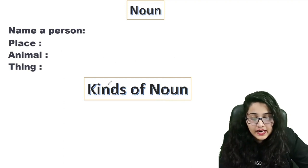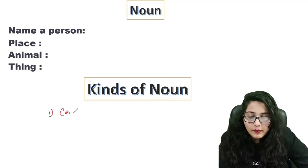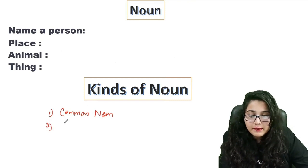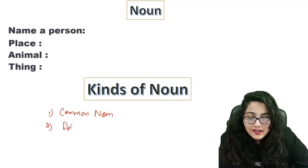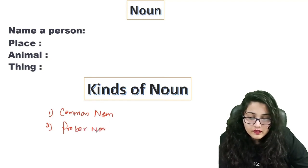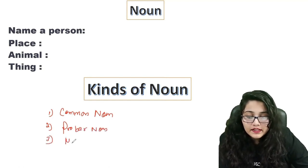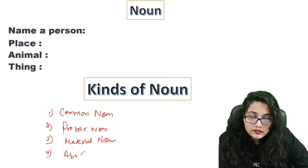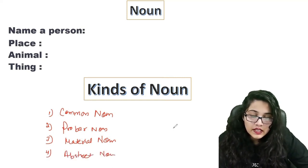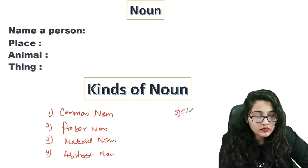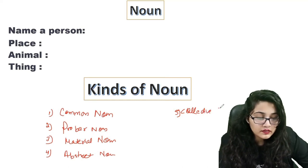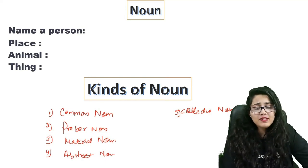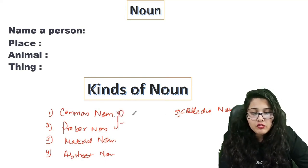Basically, we have 5 kinds of nouns. The first noun is common noun. Then it is proper noun. The third noun is material noun. The fourth noun is abstract noun. The fifth noun is collective noun. These are our total kinds.